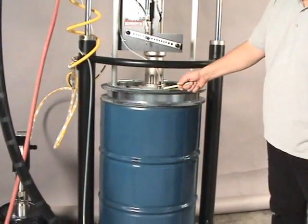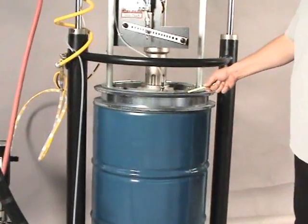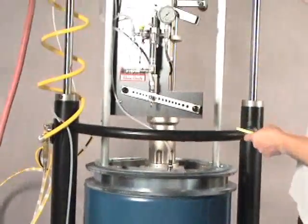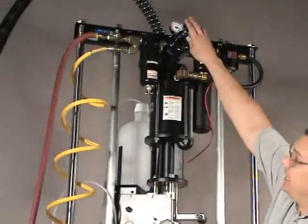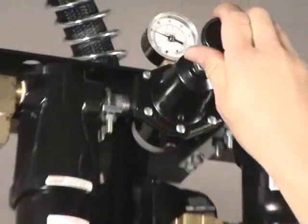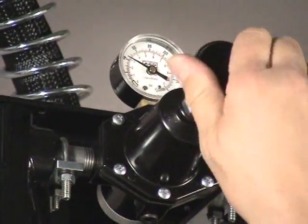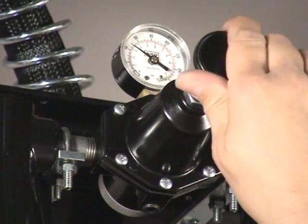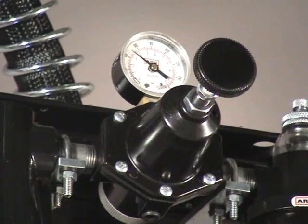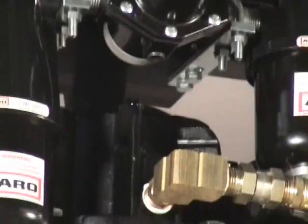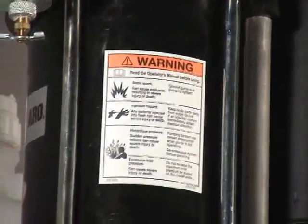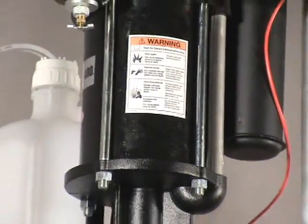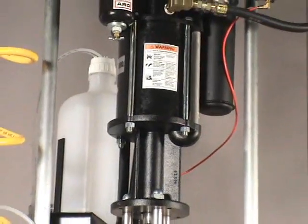With the drum centered over the follower lip seal, we will then reach up to the regulator, dialing the regulator up to increase pressure to the air motor. But at this time, the air motor and the pump will not operate until you engage the gun.